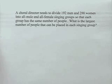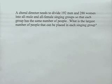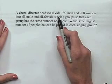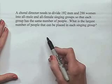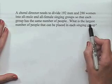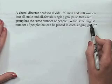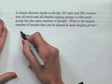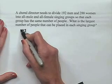Now let's consider the following word problem. A choral director needs to divide 192 men and 288 women into all-male and all-female singing groups so that each group has the same number of people. What is the largest number of people that can be placed in each singing group? We're looking for divisors — a common divisor — and we want the largest such number that works. So we're looking for the greatest common divisor.